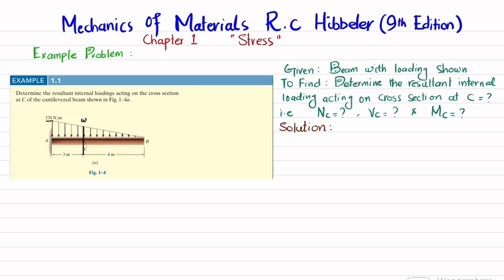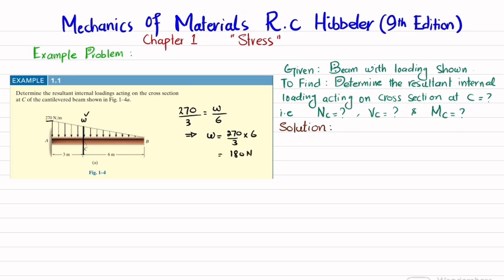At point A, we have a load of 270 Newton per meter. So how will we find W at C? You can see there are two similar triangles, and the ratio of their sides will be the same. So 270 divided by the whole length of 3 equals W over the length it acts, which is 6. From here, W equals 270 divided by 3, multiplied by 6, which equals 180 Newton per meter.